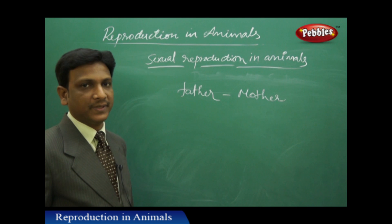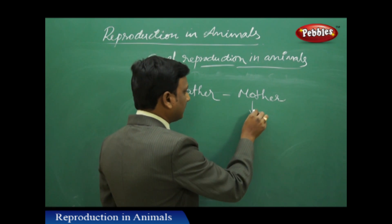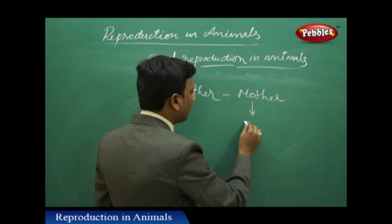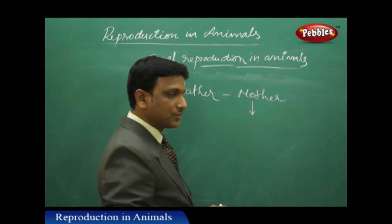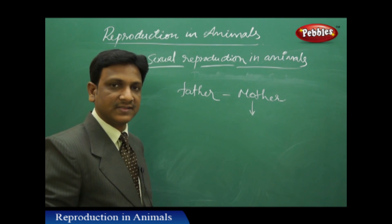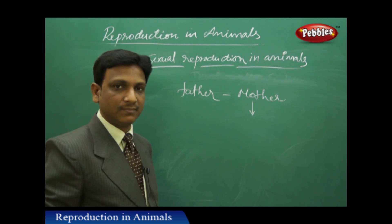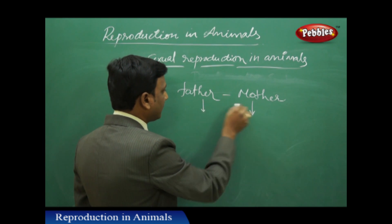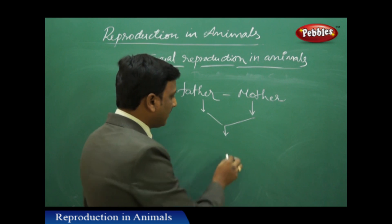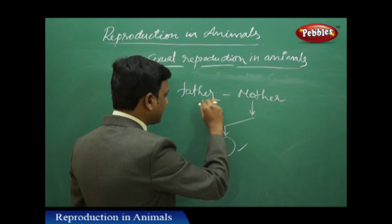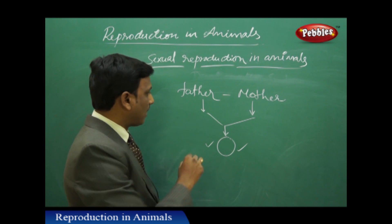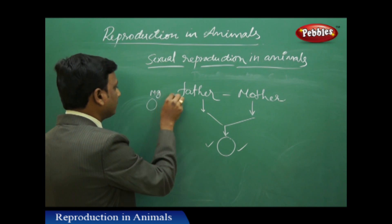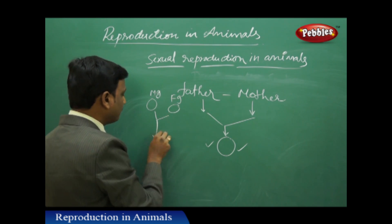Now let us consider the resemblance of children to their parents. Since the formation of the female gamete, fertilization, and development of the baby all take place in the mother's reproductive system, one might think babies resemble only their mother. But we find resemblances with both mother and father. Babies have characteristics of both. In reproduction, the male gamete and female gamete both fuse to form the zygote.